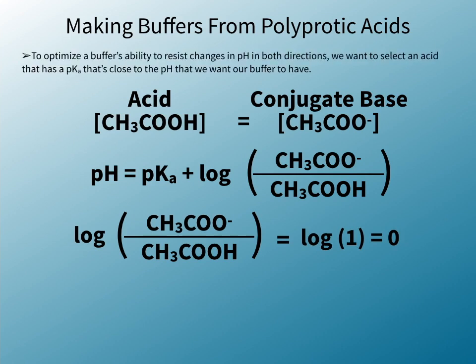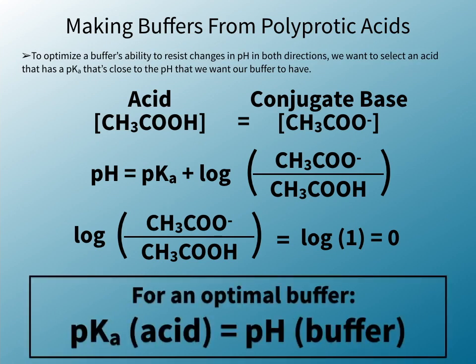To optimize a buffer's ability to resist changes in pH in both directions, we want to select an acid that has a pKa that's close to the pH that we want our buffer to have.